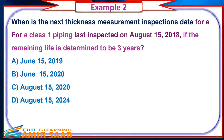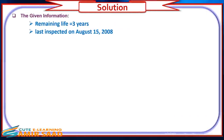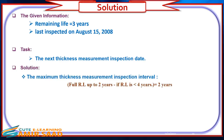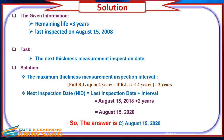Example 2: When is the next thickness measurement inspection date for a Class 1 piping circuit last inspected on August 15th, 2018, if the remaining life is determined to be three years? Solution: Since remaining life is less than four years, the maximum interval is full remaining life up to two years — so the interval equals two years. Next inspection date equals last inspection date plus interval. The answer is C: August 15th, 2020.